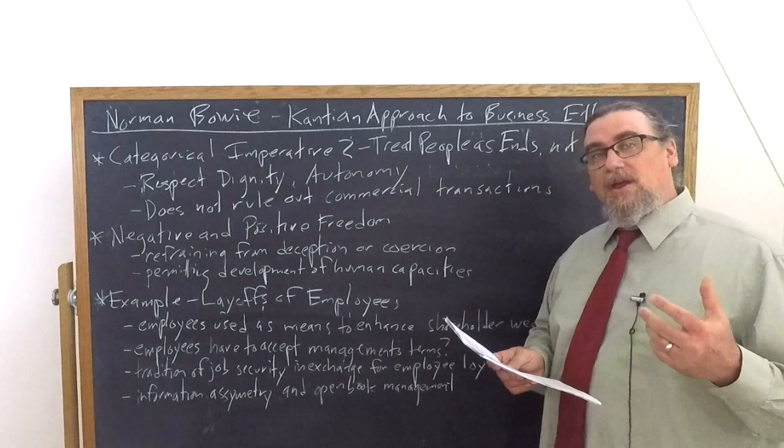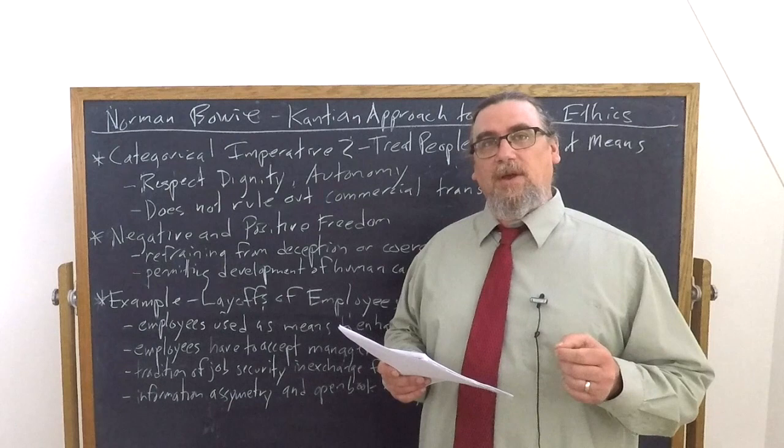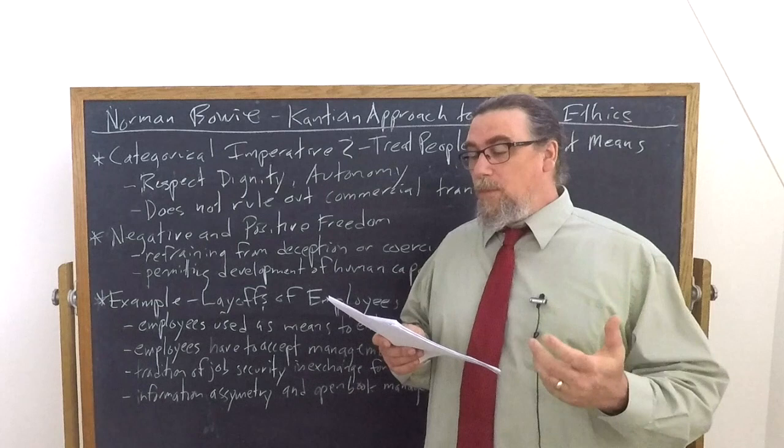So a Kantian, Bowie says, would look for ways to reduce the information asymmetry between management and employees. Are there such possibilities? Indeed, there are.